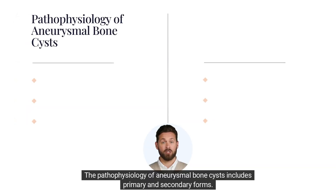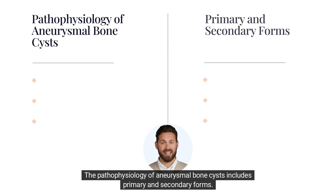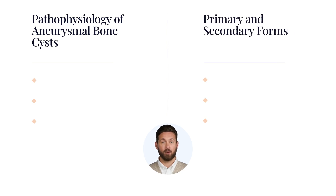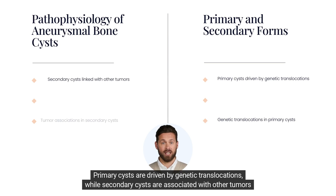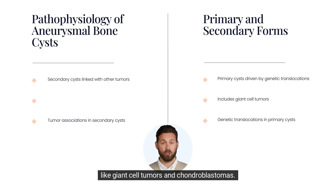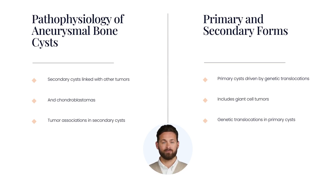The pathophysiology of aneurysmal bone cysts includes primary and secondary forms. Primary cysts are driven by genetic translocations, while secondary cysts are associated with other tumors like giant cell tumors and chondroblastomas.